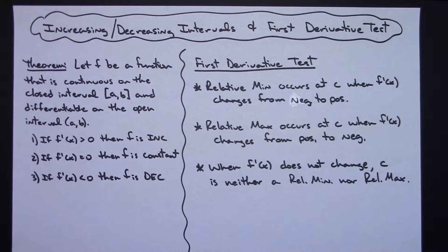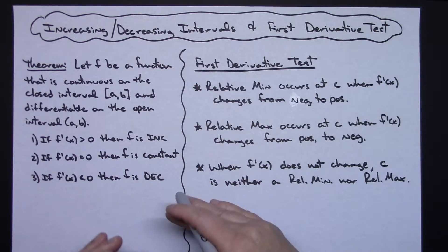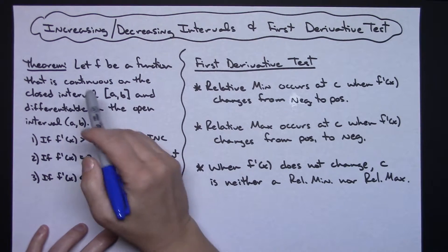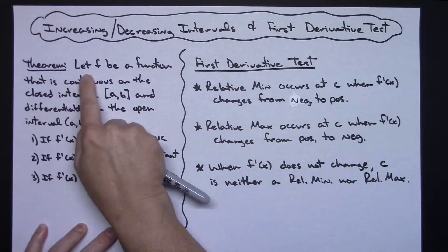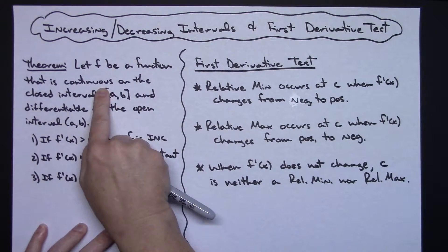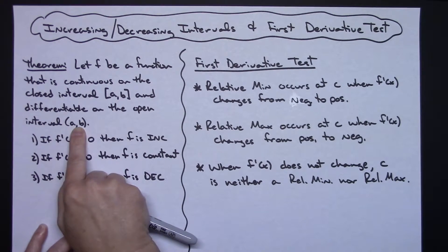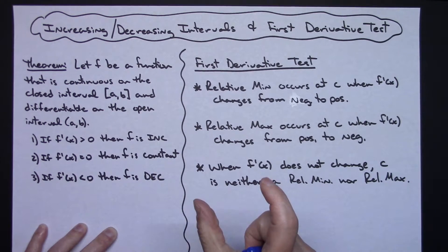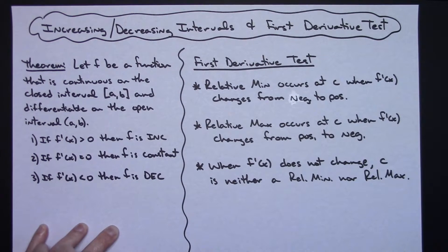Before we get to actually working out a problem, we're going to take a look at a couple of theorems that give you the knowledge you need to algebraically work out the function and find these things. Over here on the left I have a theorem: let f be a function that is continuous on the closed interval and differentiable on the open interval. You've always got to check that original function and see if it's continuous on the closed and differentiable on the open.